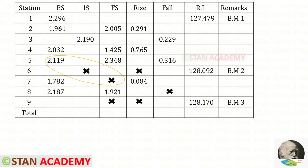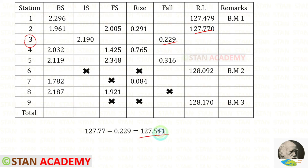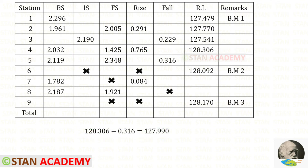Now we have to take from this back sight to the fore sight. In station number 6 there are two unknowns, so we can't proceed here. First we need to find the reduced levels, then we can come back. Let us find the reduced level in station number 2. This plus this, we will get that. To find the reduced level in station number 3, we subtract the fall from this reduced level. To get the reduced level in station number 4, we add this rise to the reduced level. To get the reduced level in station number 5, we subtract this fall from this reduced level.